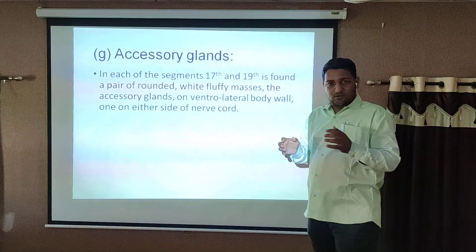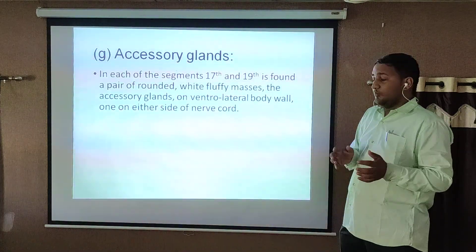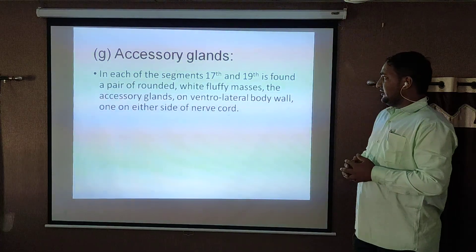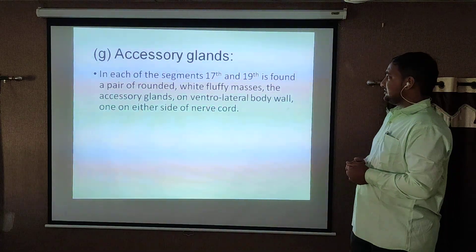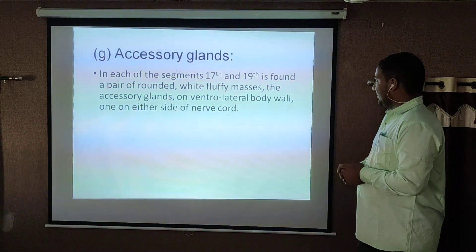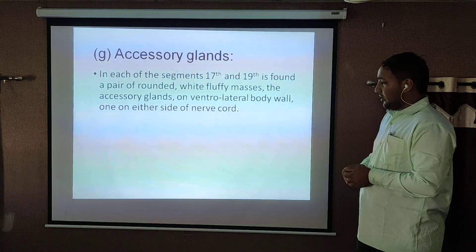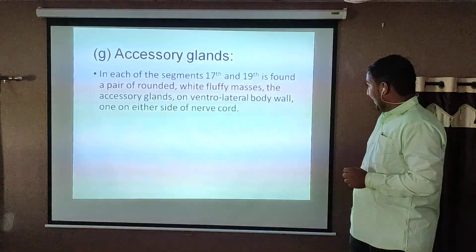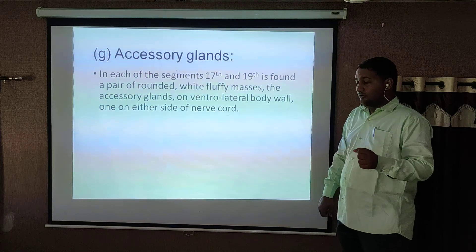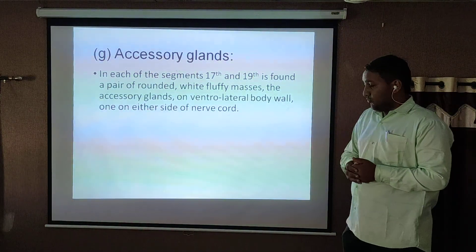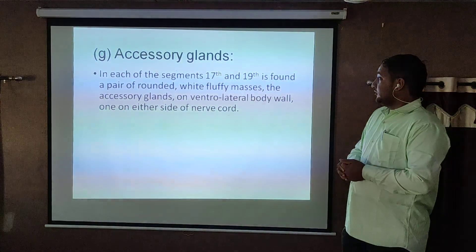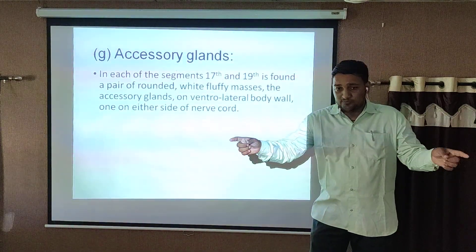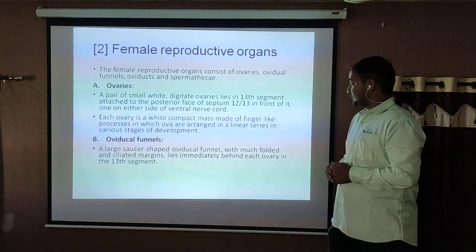This is the important part of the reproductive system of earthworm. In each of the segments 17 and 19, there is found a pair of rounded white fluffy structures — the accessory glands — on the ventrolateral body wall on either side of the nerve cord.